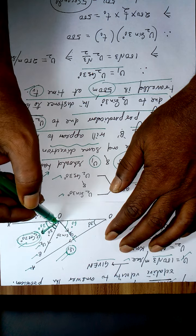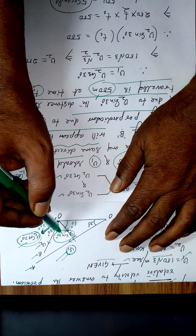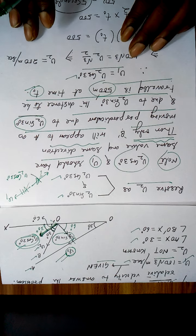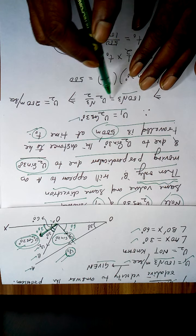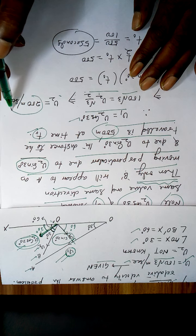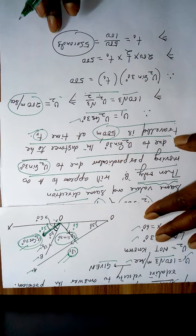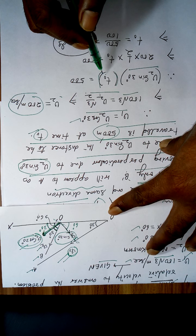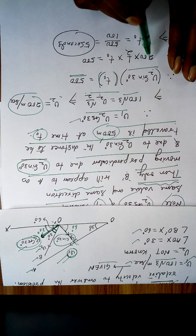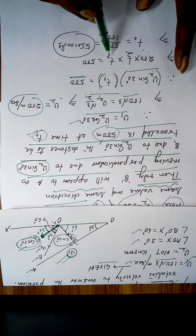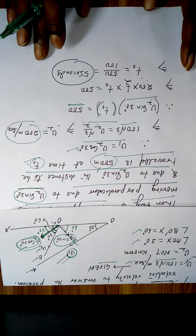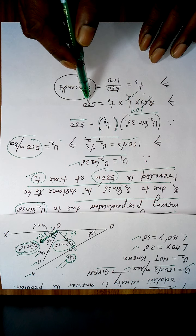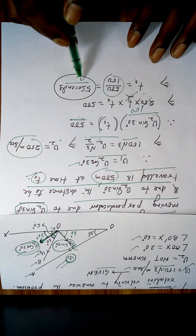Therefore, v1 = v2 cos30 = v2 × (√3/2). Since v1 = 100√3, this gives v2 = 200 meters per second. Now, due to v2 sin30, the distance to be travelled is 500 meters in time t0. Substituting: 200 × (1/2) × t0 = 500, which gives 100 × t0 = 500. Therefore, t0 = 500/100 = 5 seconds.